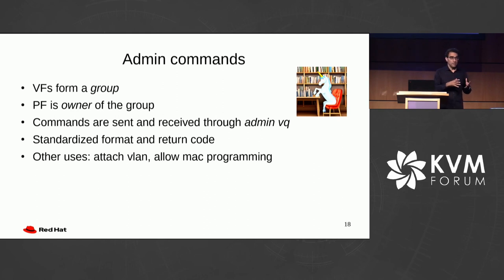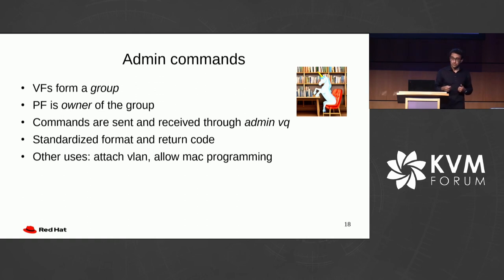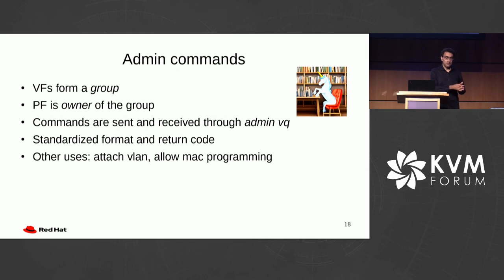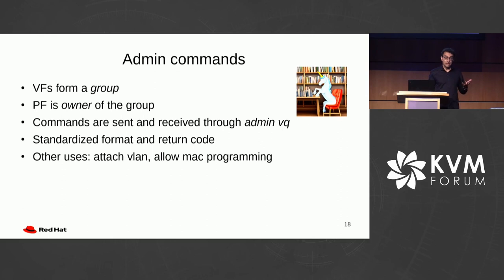VFs are members of a group, and each group has an owner — which is the PF in this case. The PF has a special admin virtqueue, and we send commands through that virtqueue. We have a standardized format specifying which VF we're talking about, which member, and we get back standard return codes. This turns out to be useful beyond just migration. For example, there are standard things you want to do from the hypervisor side, like attaching a VLAN to a specific VM so all its networking traffic goes inside that VLAN — not something you allow the guest to do. Another use case is controlling whether a VM can program its own MAC or is limited to a specific MAC address.